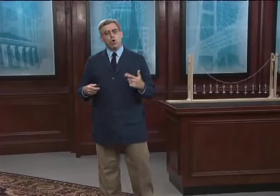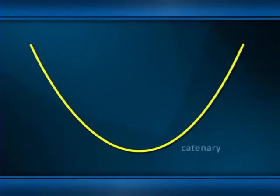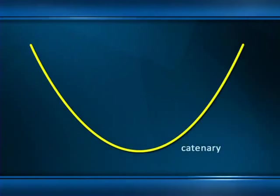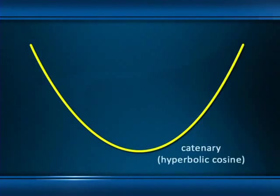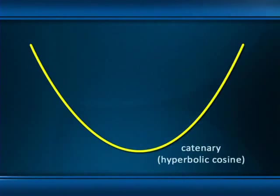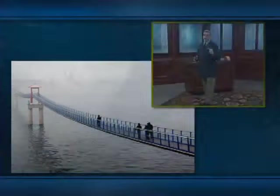A cable loaded along its own length naturally assumes a curved shape called a catenary. Mathematically, the shape of the cable is a function called a hyperbolic cosine. The catenary looks very much like a parabola, but mathematically it is quite different. A draped cable naturally assumes this characteristic geometric shape without any assistance from us.